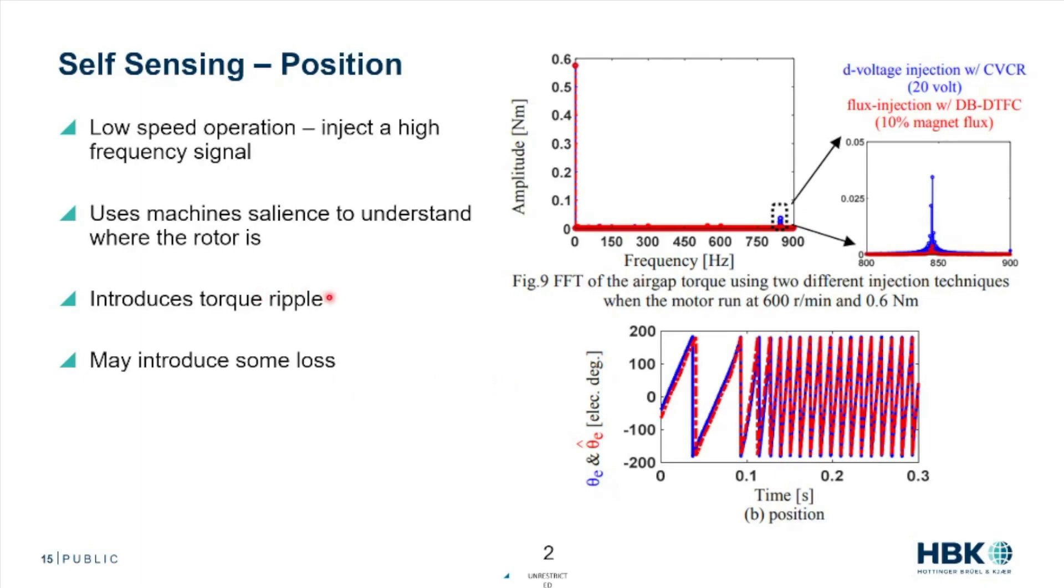Now, this might introduce some torque ripple. It might introduce some loss. But if we take a comparison of an angle encoder and the predicted angle from the harmonic injection, that tracks really nicely. So we can do clever things with understanding where the machine is and controlling the machine. We can use things like high frequencies to predict where the machine is.